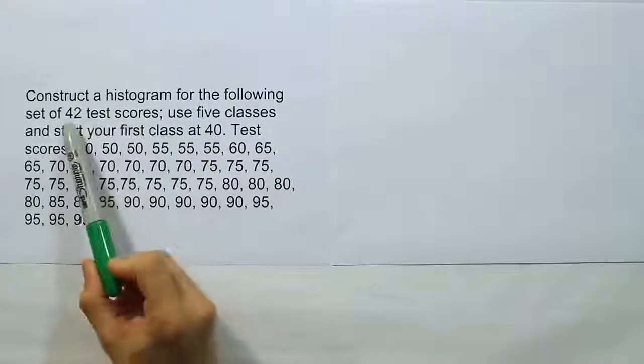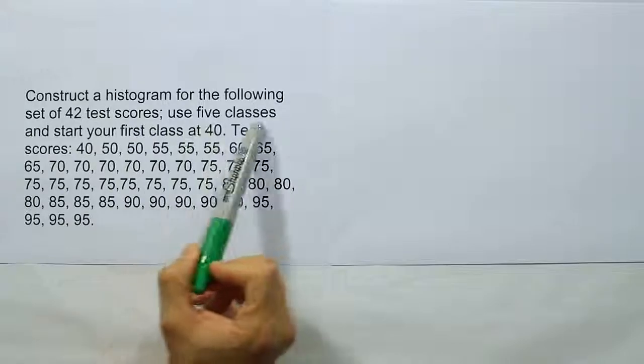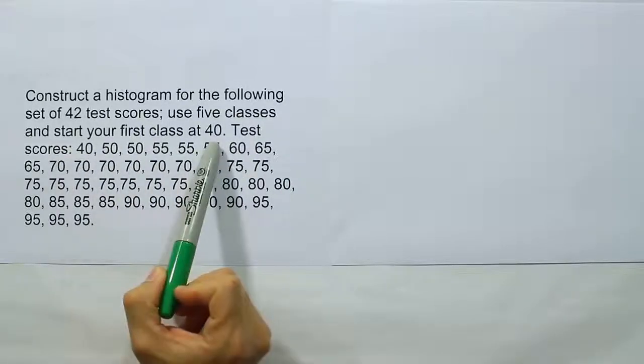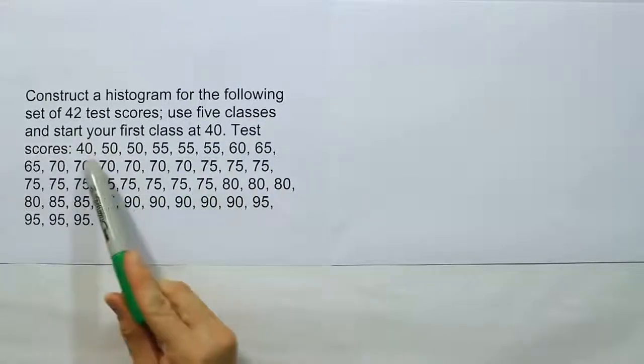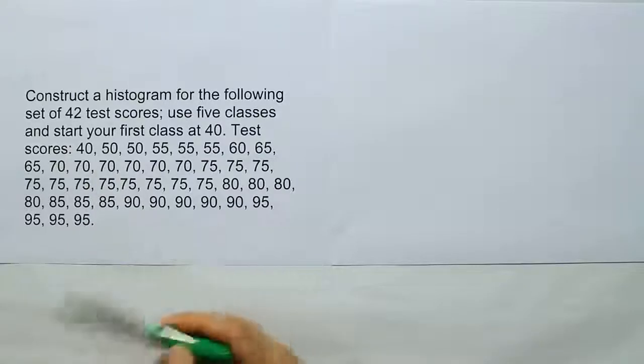Construct a histogram for the following set of 42 test scores. Use five classes and start your first class at 40. They give us the test scores here. There's several of them. What we want to do here is, as our first step, determine the class width.